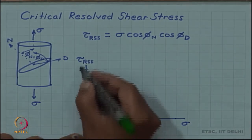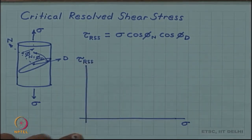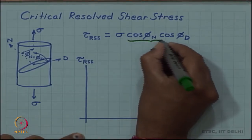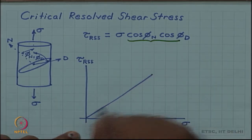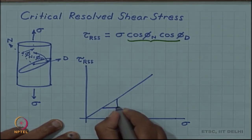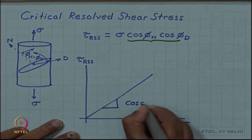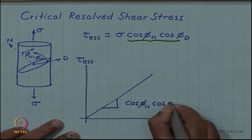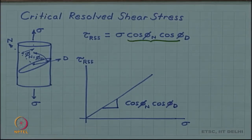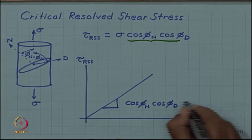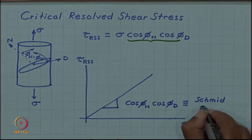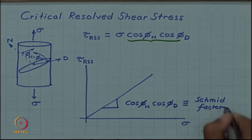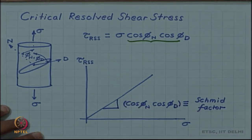If we plot this relationship — resolved shear stress as a function of sigma — we expect to get a straight line. The slope is expected to be cos phi_n cos phi_d. This product is sometimes called the Schmid factor.